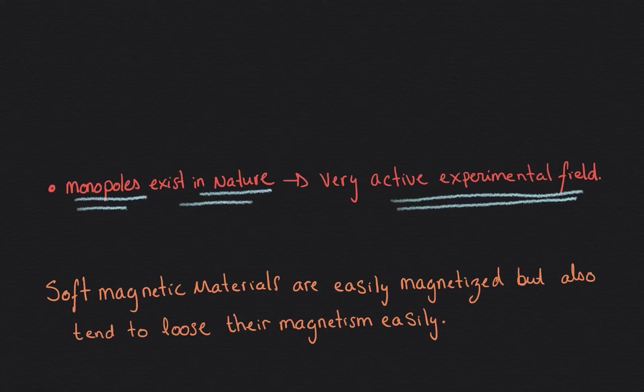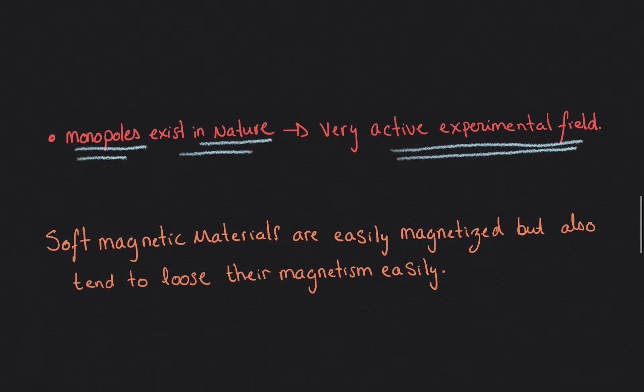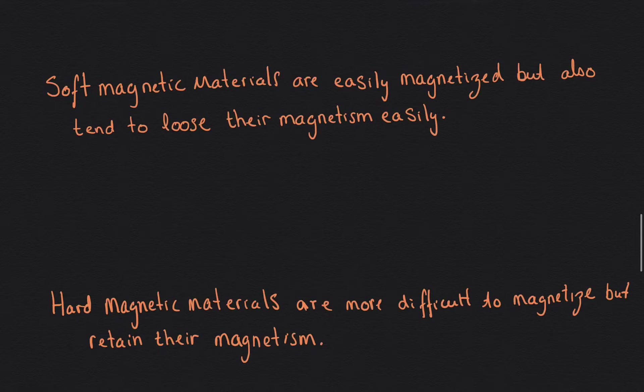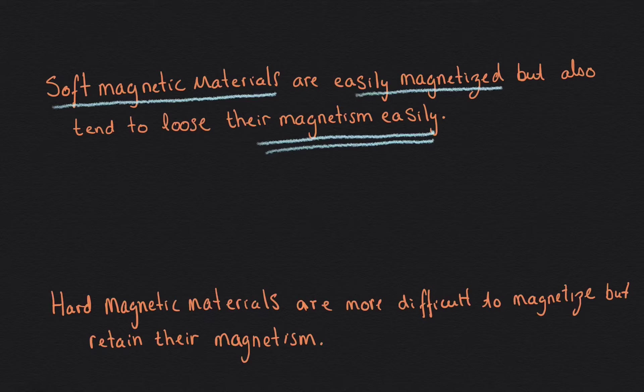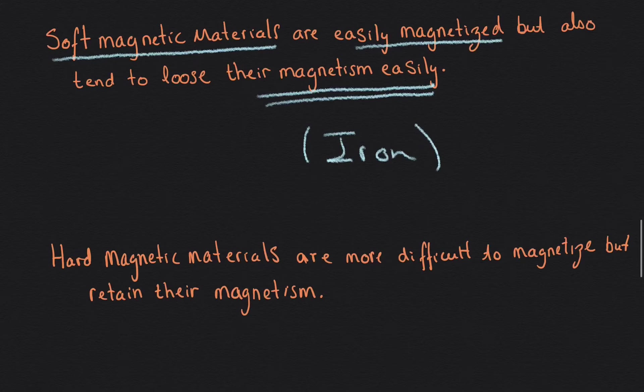All right, so now let's get two keywords that we use to characterize these magnets that we will start studying in this chapter. Now, when we talk about magnets, we will normally talk about, for our case, two types of magnets, which we call the soft or the hard magnetic material. So for the soft magnetic material, these are materials that are actually easily magnetized, but also tend to lose their magnetization easier. So a common example of this can be iron.